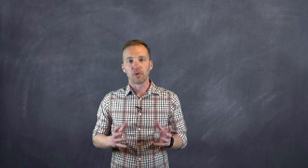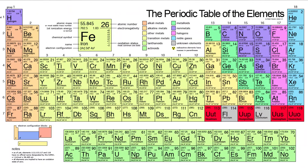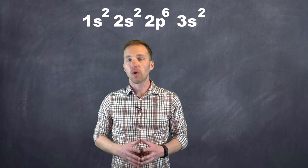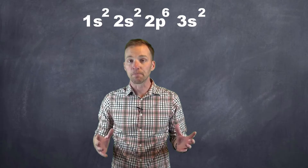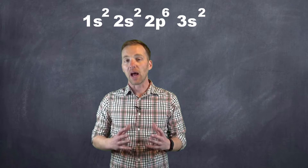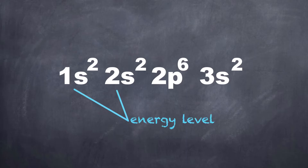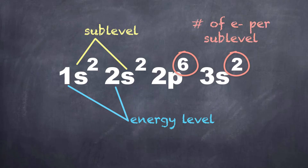An electron configuration for a particular element will look something like this. If you have a certain type of periodic table, it will actually have an electron configuration like this for each element. The larger numbers in front indicate the energy level in which these particular electrons can be found, while the letters represent the sublevel within a particular energy level. The superscript numbers represent the total number of electrons in that particular sublevel for that particular element.